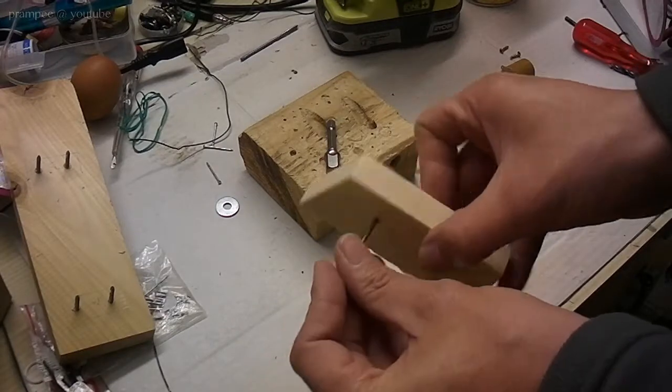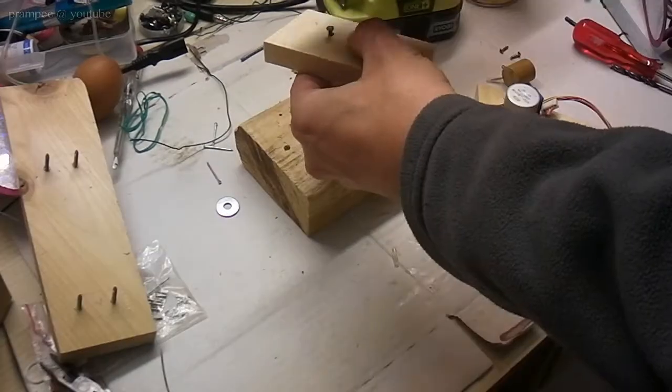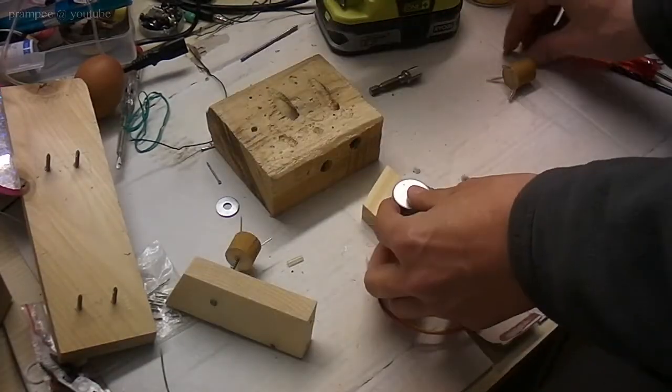So the nail comes through the post. Then comes a spring from a ballpen and the holding part. The spring will keep the egg tight.